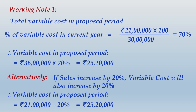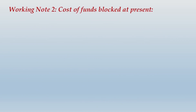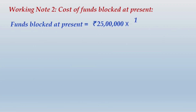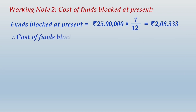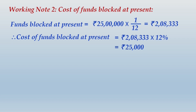Working Note 2: Cost of funds blocked at present. Total cost of goods sold is 25 lakhs. With a credit period of one month, take 1/12 of annual cost of goods sold: monthly blockage is 2 lakh 8,333. This amount remains blocked on average throughout the year. Applying the cost of funds at 12 percent on 2 lakh 8,333 gives cost of funds blocked at present as 25,000.